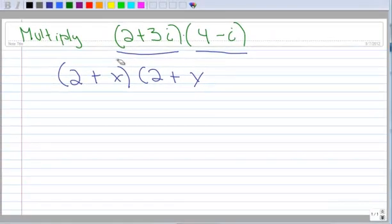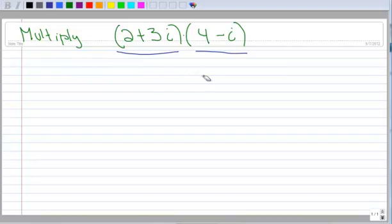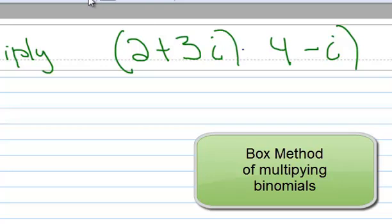And I'm going to do this with the box method because it's just a little different way of multiplying binomials, so I want to do that just to demonstrate a different way to do that.